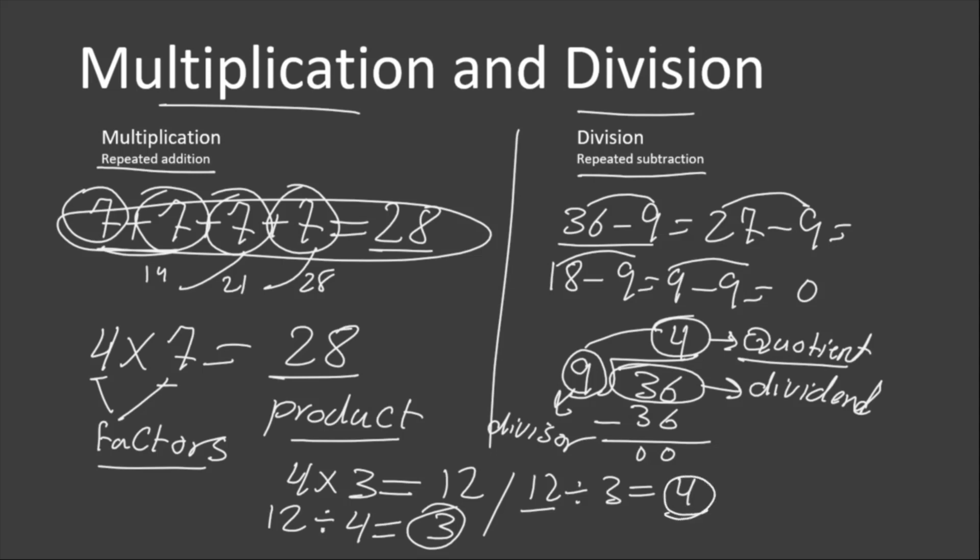Students, if we look closely, we see that 4 times 3 equals 12. But when we divide 12 by 4, we get 3, and when we divide 12 by 3, we get 4. So we can say that multiplication and division are an inverse operation. They cancel out each other.